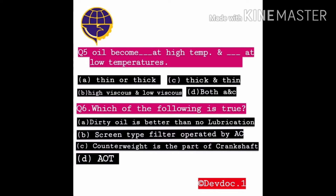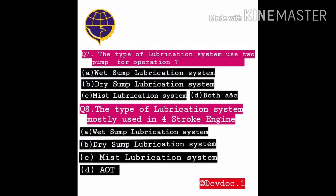Sixth question options continued — B: Screen type filter operated by AC, C: Counterweight is part of the crankshaft, D: All of these. Seventh question: The type of lubrication system that uses 2 pumps for its operation — Option A: Wet sump lubrication system, B: Dry sump lubrication system, C: Mist lubrication system, D: Both A and C.